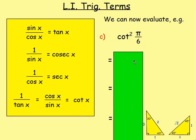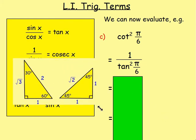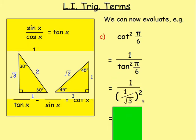And finally, evaluating cot²(π/6). cot is 1 over tan, so that's the same as 1 over tan²(π/6). Remember, tan squared means the tan of π/6, squared. Work out tan(π/6) — π is 180, so 180 divided by 6 is 30. Tan(30) is 1 over root 3. Squaring 1 over root 3: square the 1, you get 1; square the root 3, you get 3. So you get 1 over (1/3), which becomes 3. That would be your answer.